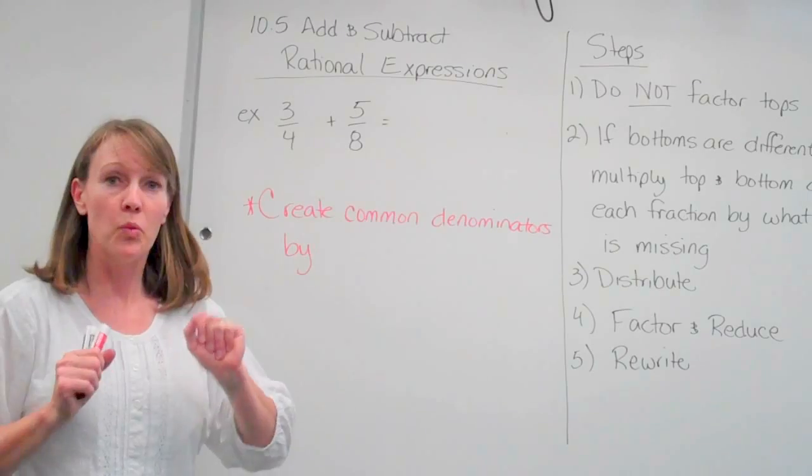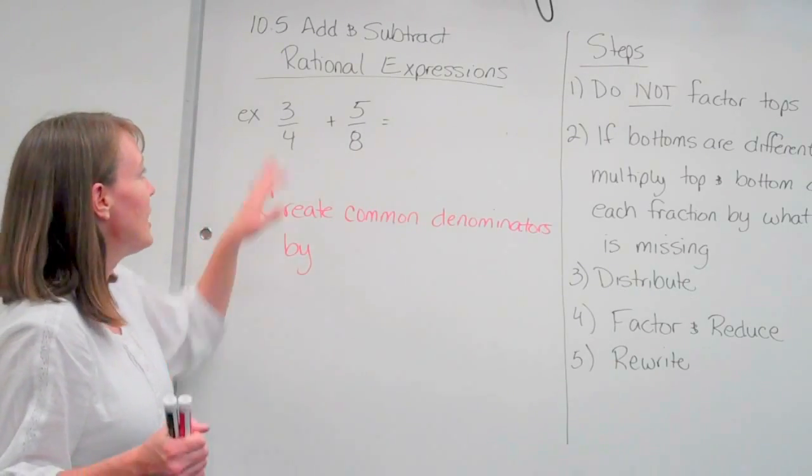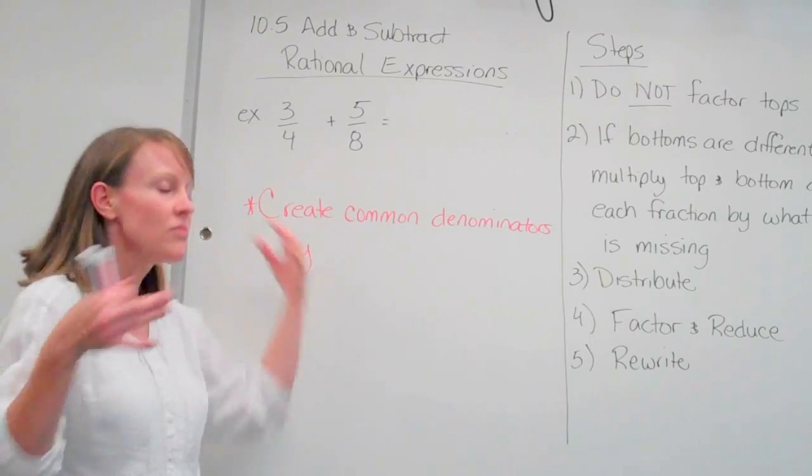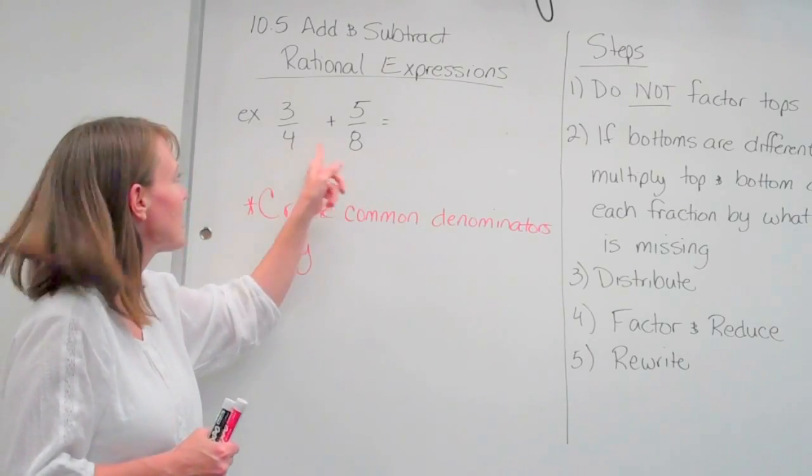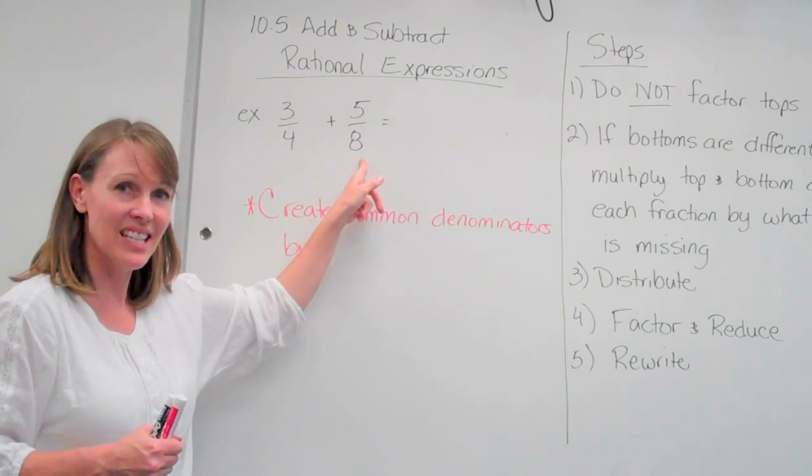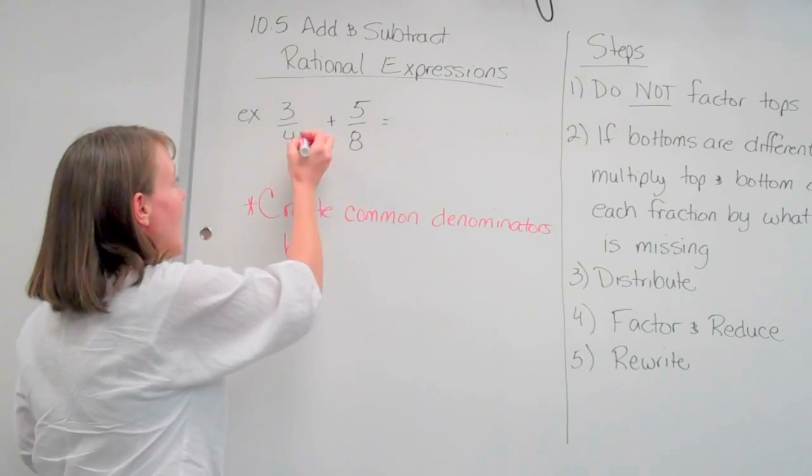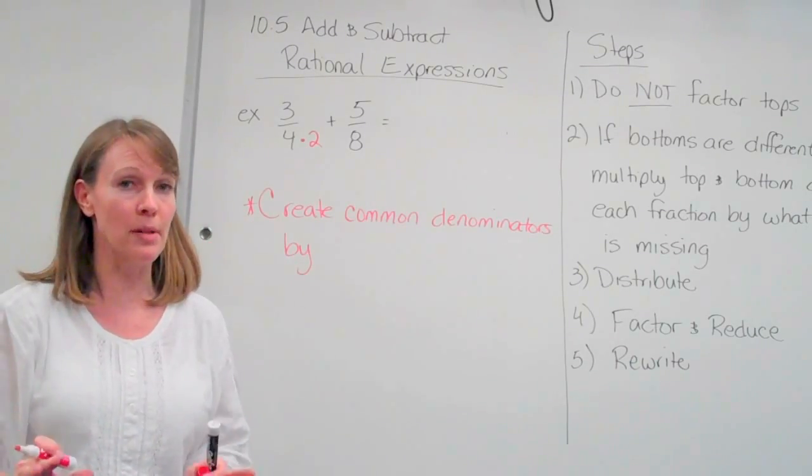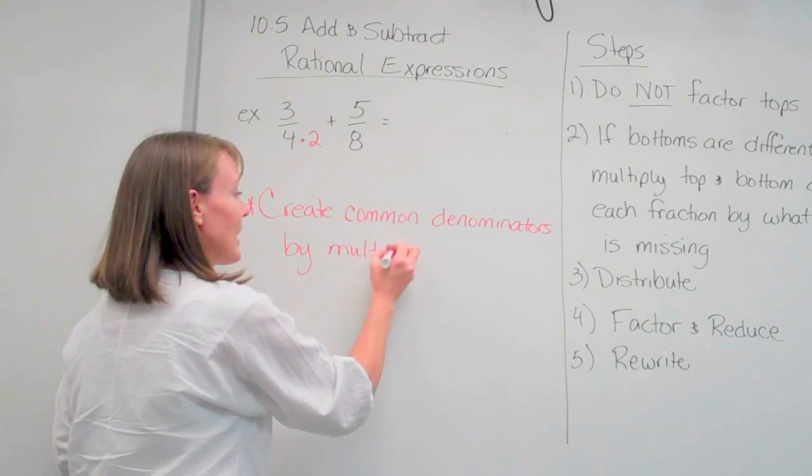Okay, so we're going to look at ones now that don't have common denominators. We look at the fractions and say, are the bottoms the same? No, they're not. So we need to create common denominators. The common denominator would be eight, and we're going to need to multiply this side by two. To create common denominators, you can only multiply, you cannot add, you cannot subtract, and you cannot divide.